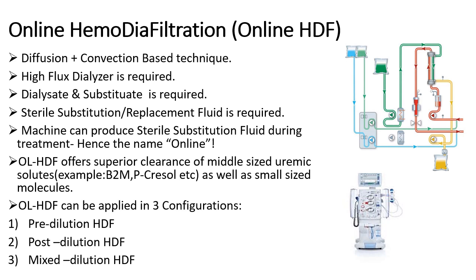Just like HF, haemodiafiltration can also offer superior higher molecular weight clearance as well as small molecular weight clearance, such as beta-2 microglobulin, urea, and creatinine, because both solute transport mechanisms are involved. Diffusion is used for the removal of small molecules and convection for the removal of medium to large sized molecules, resulting in superior clearance of both.